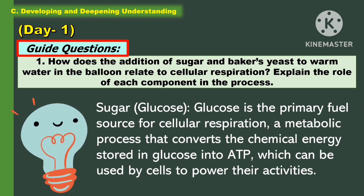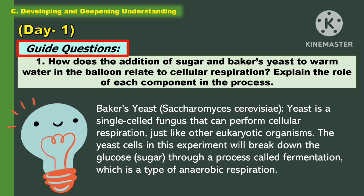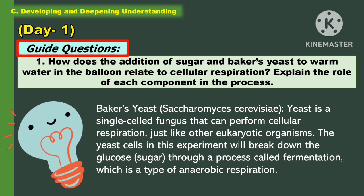For the first guide question: how does the addition of sugar and baker's yeast to warm water in the balloon relate to cellular respiration? Explain the role of each component in the process. Sugar or glucose is the primary fuel source for cellular respiration, a metabolic process that converts the chemical energy stored in glucose into ATP, which can be used by cells to power their activities. Baker's yeast is a single-celled fungus that can perform cellular respiration just like other eukaryotic organisms. The yeast cells in the experiment will break down the glucose through a process called fermentation, which is a type of anaerobic respiration.